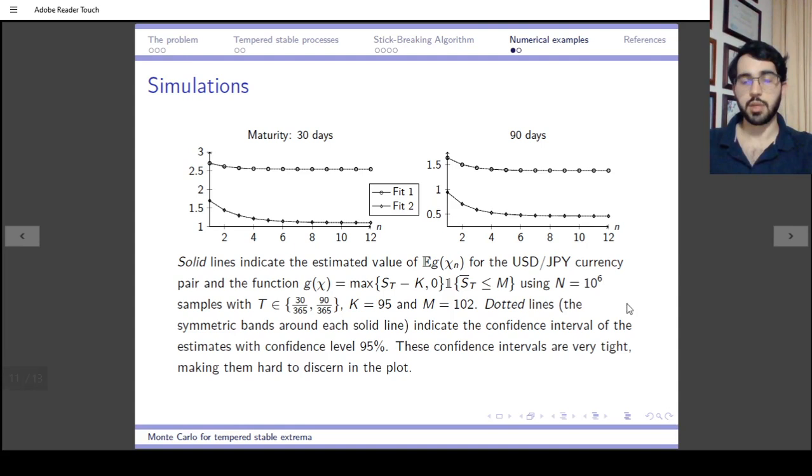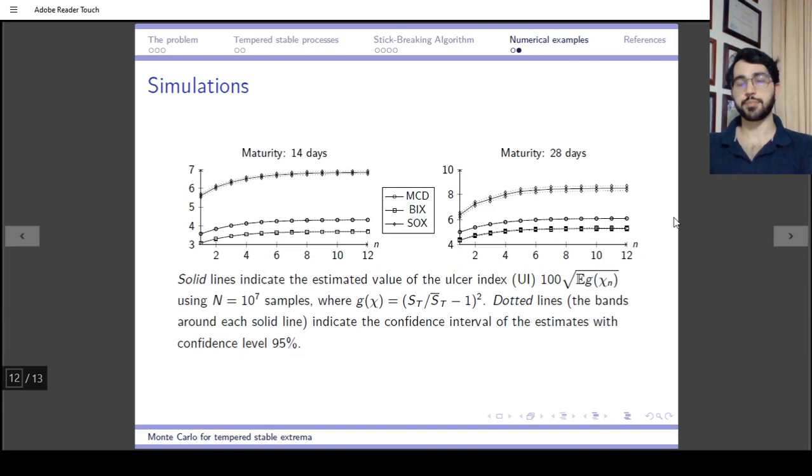This is based on a million simulations. Even though it's hard to see, there's actually a 95% confidence interval for each of these points. It's hard to see because the variance is not that large, and the confidence interval is really tight.